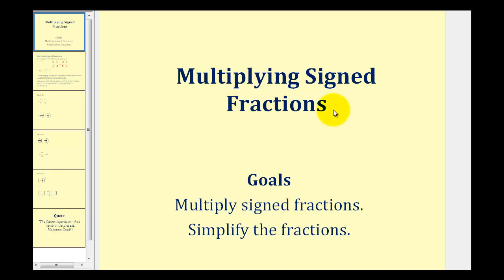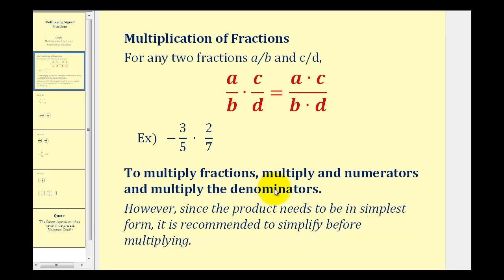Welcome to a lesson on multiplying signed fractions. The rule for multiplying fractions is we multiply the numerators and we multiply the denominators. So if we have two fractions in the form a over b and c over d, the product will have a numerator of a times c and a denominator of b times d.